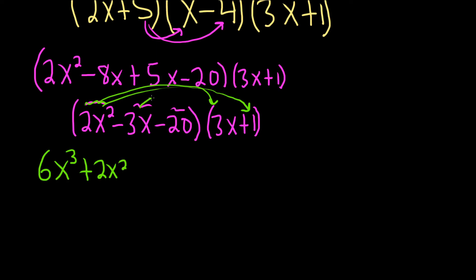Now we go to the next one. Negative 3x times 3x is going to give us a minus 9x squared, right? There's a minus sign there. And then minus 3x times 1 is going to give us a minus 3x.